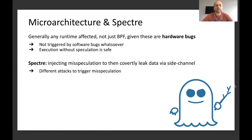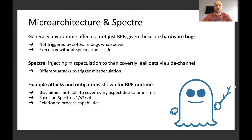Research has shown that a timer can be reconstructed in different ways, so removing time measurement would not mitigate such attacks and would not be enough. In general, Spectre is basically about injecting misspeculation on purpose and then covertly leaking this data to a side channel. There are different ways to trigger such misspeculation, and in this talk I will give a few examples and show mitigations that we do inside BPF and the kernel.